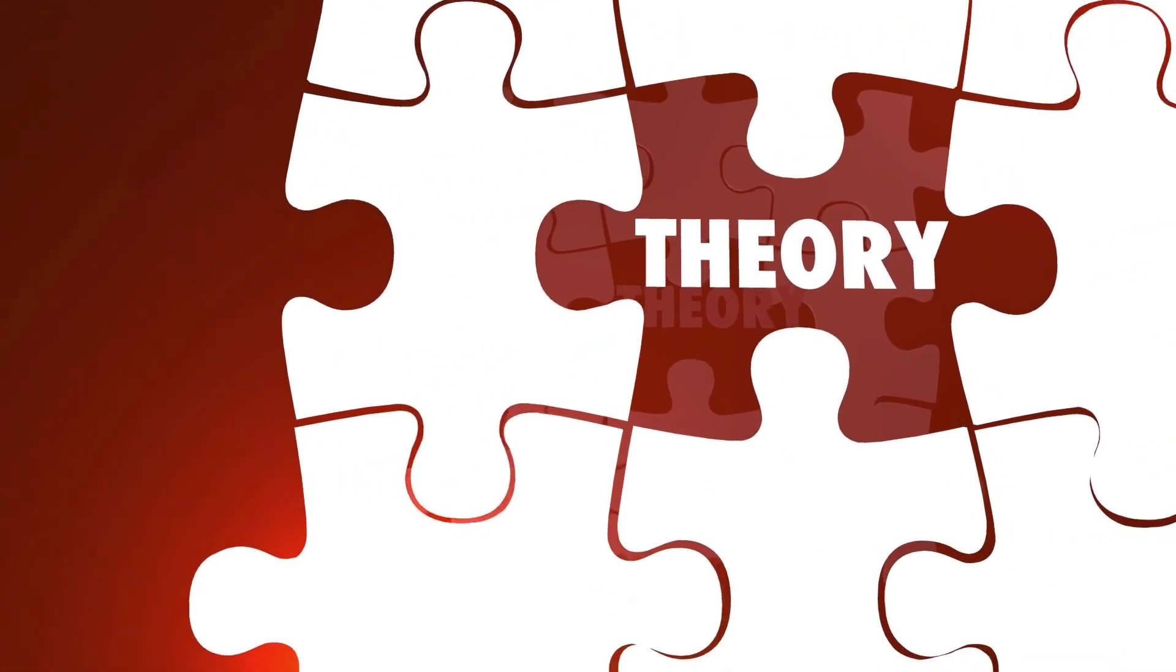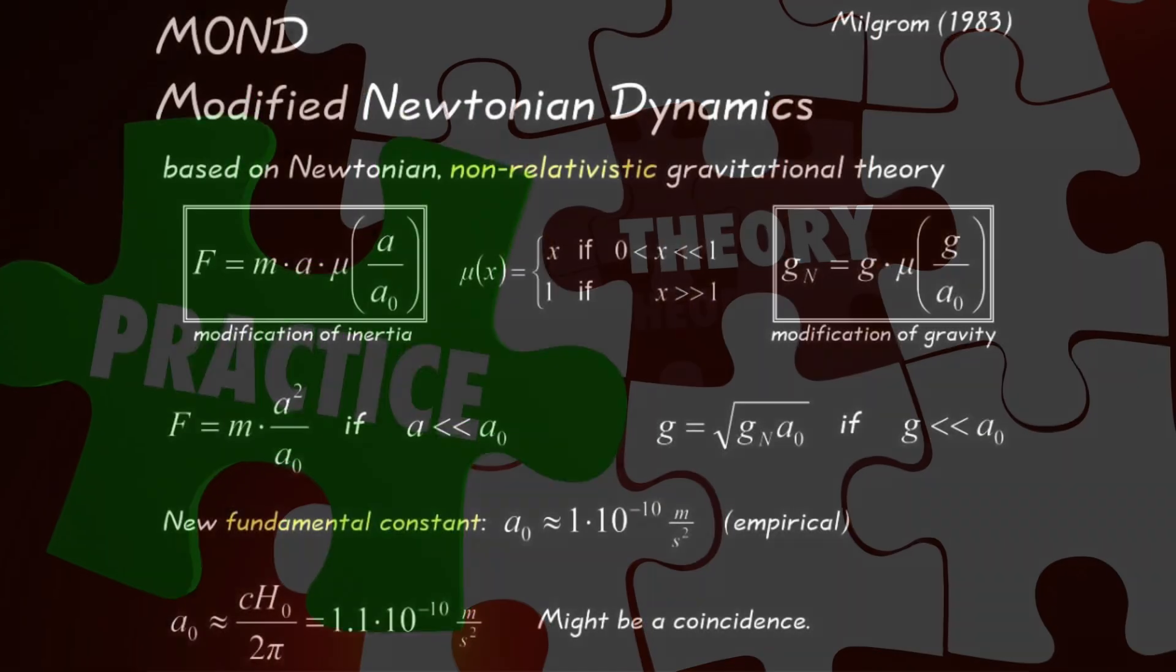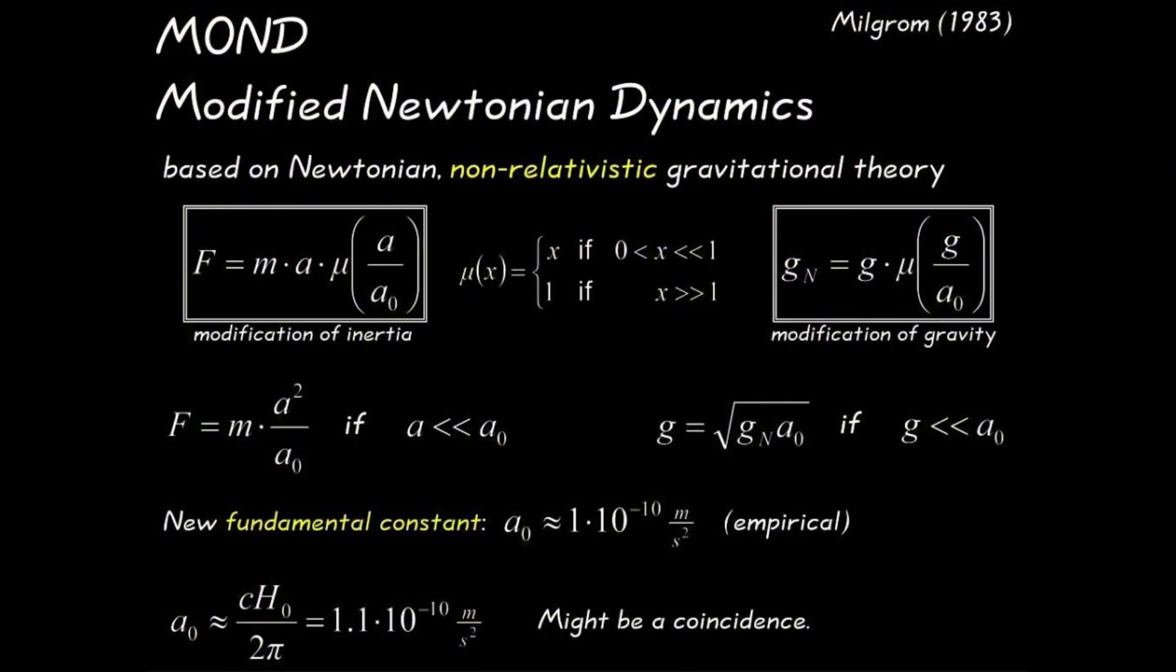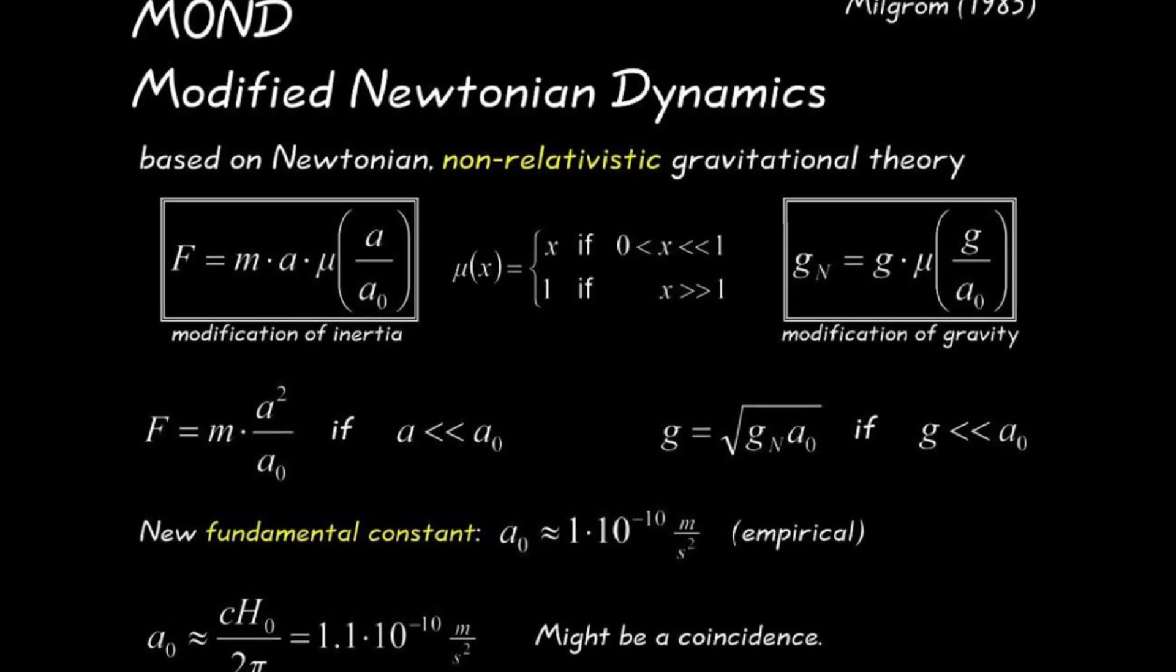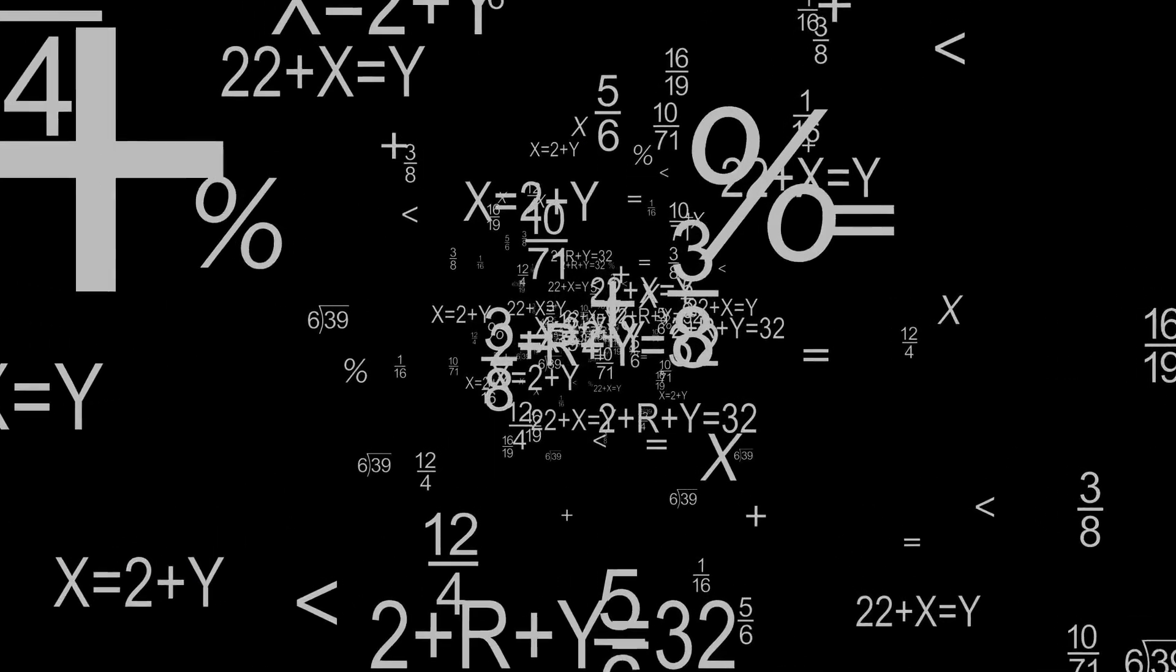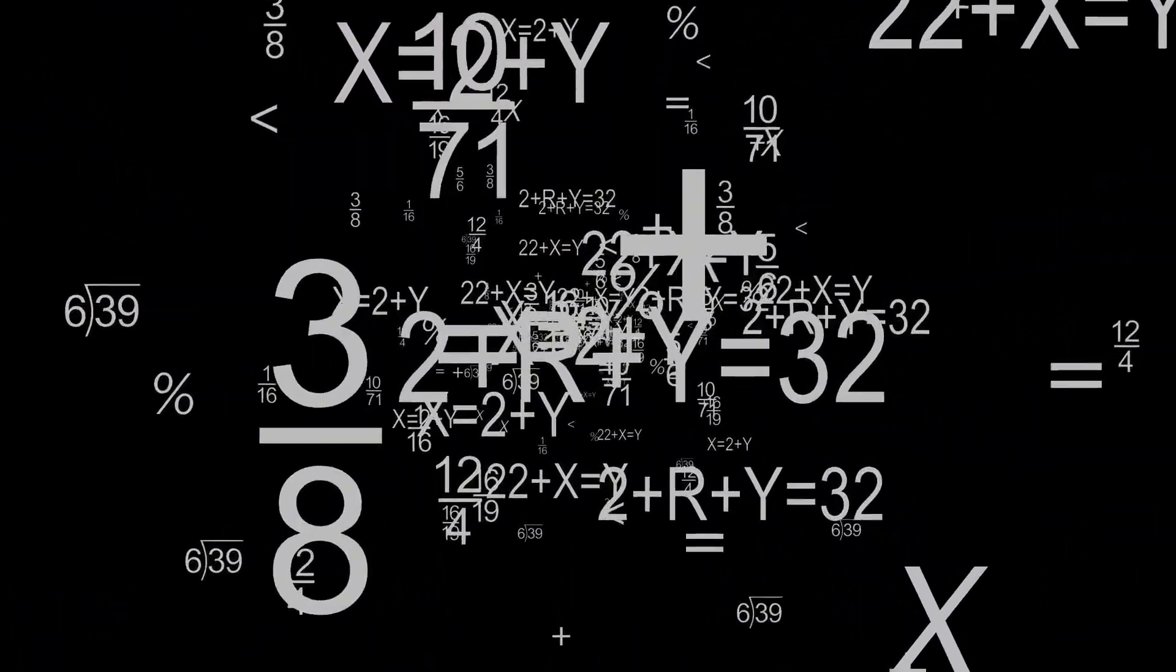Instead, the findings may point toward a controversial alternative theory called Modified Newtonian Dynamics, or MOND, a theory that many in the scientific community have spent years dismissing. But now, the data might just be on MOND's side.